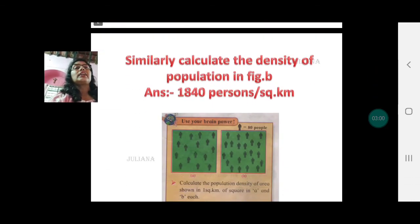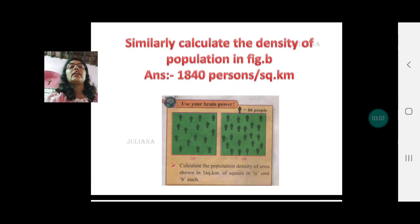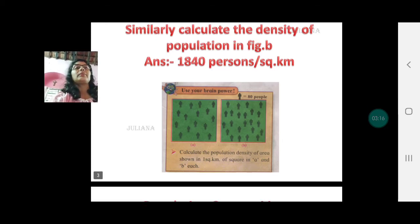Similarly now you can calculate the density of population in figure B. Remember 1 symbol 80 people, count how many symbols, multiply by 80, divided by 1. So the answer should be 1840 persons per square kilometer.